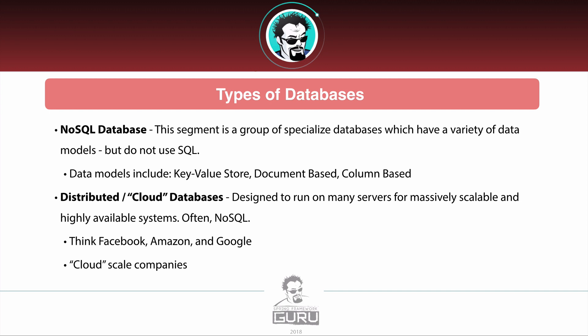When I say massively scalable systems, think Facebook, Amazon, Google — these cloud-scale companies. Amazon reportedly handled 40% of Black Friday sales last year, which is insane. Imagine the systems behind that — they're running multiple data centers just to handle it. We are not going to be looking at those, but we are definitely going to be looking at relational databases coming up in this course.